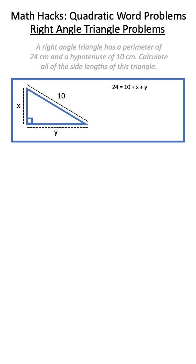We know that the perimeter is 24 and this is just the sum of all sides. We also know from Pythagorean theorem that 10 squared will be equal to x squared plus y squared.